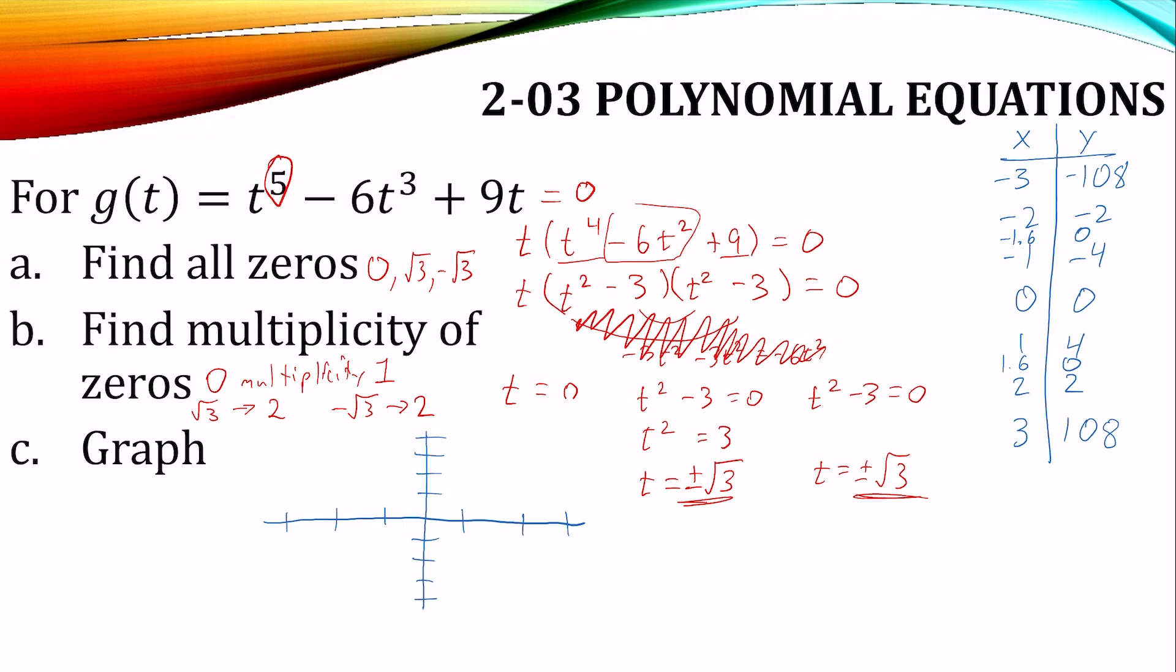Alright. -3, -108 is way down there. -2, -2. -1.6 and zero. -1, -4. Zero, zero.